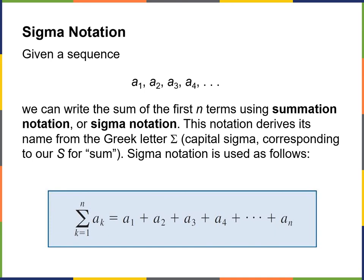We need to talk about sigma notation. Given a sequence of numbers, we can write the sum of the first however many numbers using summation notation — sigma. The notation derives from the Greek letter sigma, corresponding to S for sum. It kind of looks like a big E. When you see sigma, it means you're adding up all the numbers. In Excel, you just use the sum function.